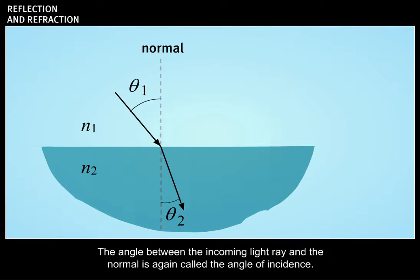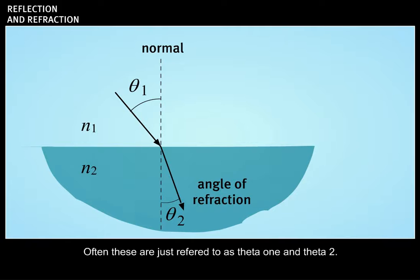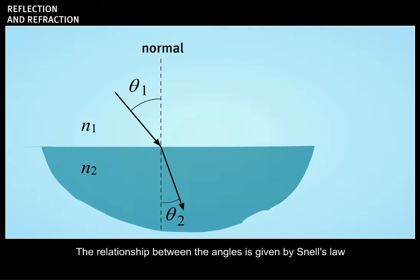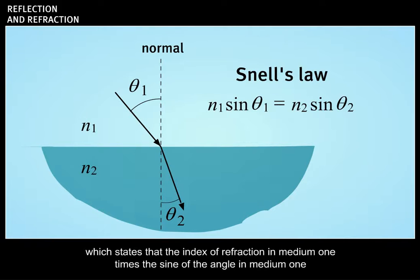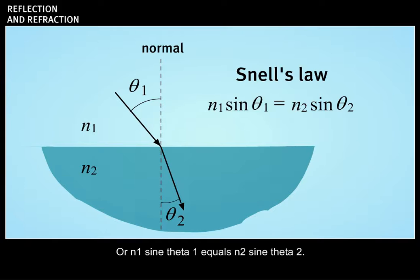The angle between the incoming light ray and the normal is again called the angle of incidence. The angle for the outgoing ray is the angle of refraction. Often these are just referred to as theta 1 and theta 2. The relationship between these angles is given by Snell's law, which states that the index of refraction in medium 1 times the sine of the angle in medium 1 equals the index of refraction in medium 2 times the sine of the angle in medium 2. Or, n1 sine theta 1 equals n2 sine theta 2.